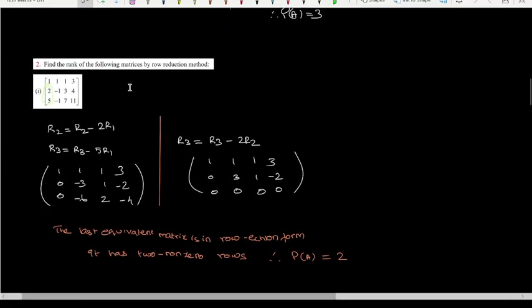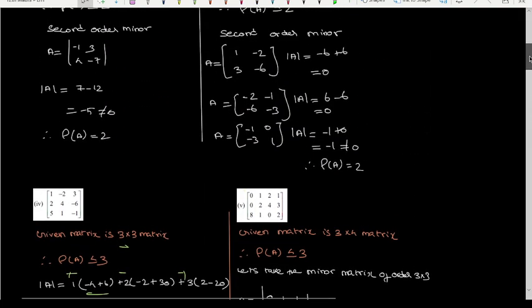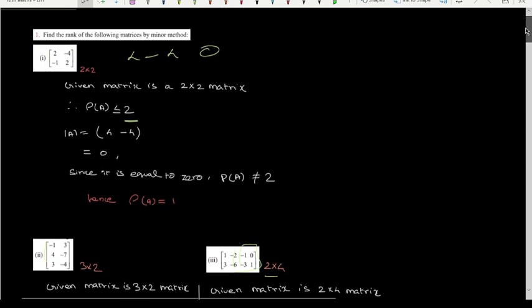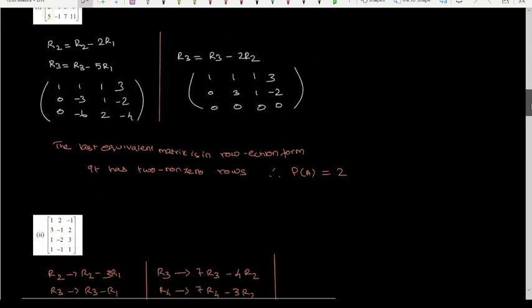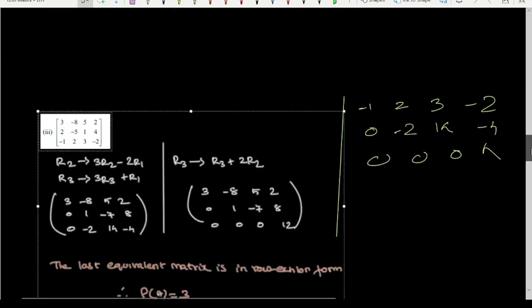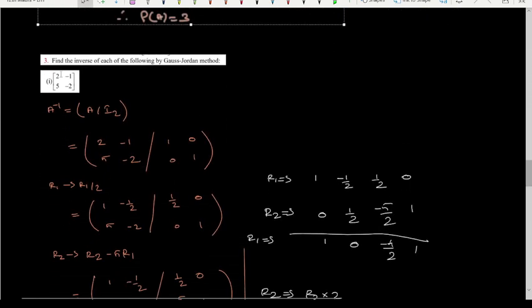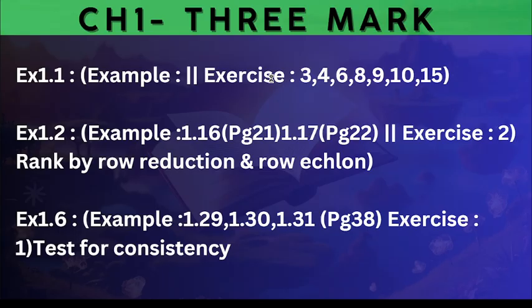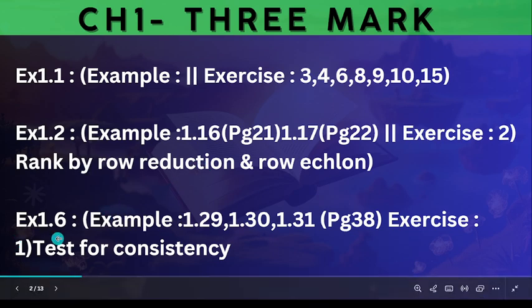So find the rank of the following matrix by row reduction method, it is very easy. Minor method is 2 mark, row echelon method is important. Find the inverse by Gauss-Jordan method. Next exercise 1.6 test for consistency, 1.2 very important.